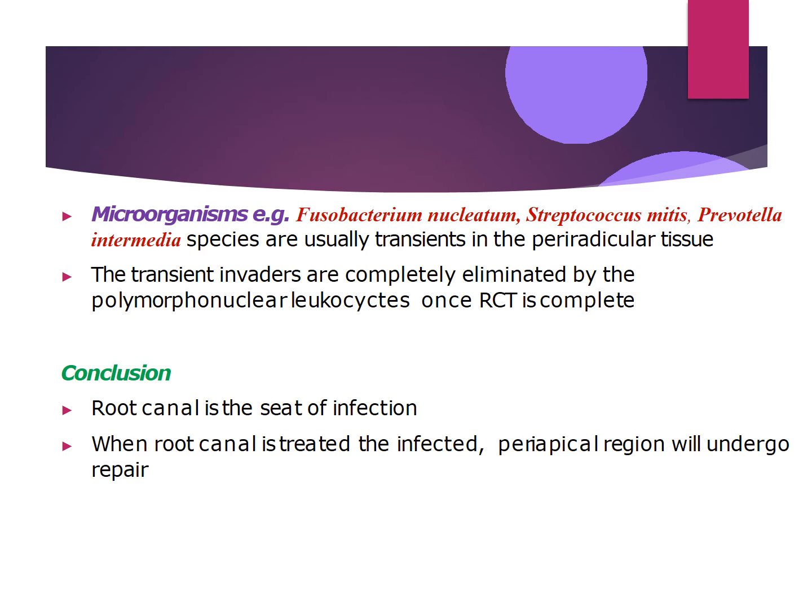Microorganisms like Fusobacterium nucleatum, Streptococcus mitis, and Prevotella intermedia species are usually transient in the peri-radicular tissue. These transient invaders are completely eliminated by neutrophils once the root canal treatment is completed. To conclude, the root canal is usually the seat of infection. If the root canal is treated and properly sealed, the periapical region will undergo complete repair and the tooth can function normally inside the oral cavity.